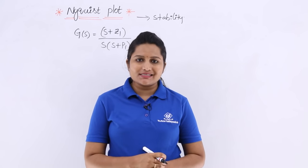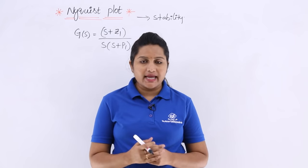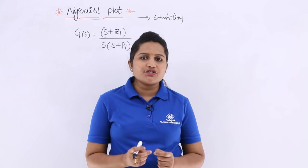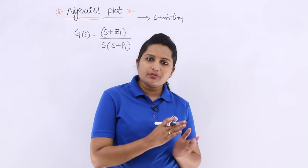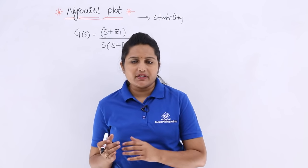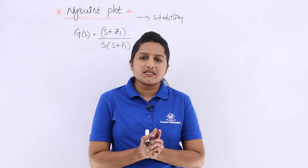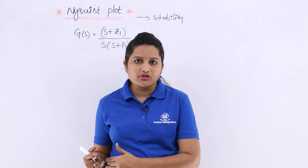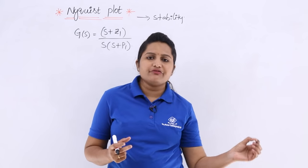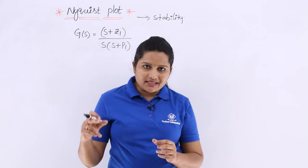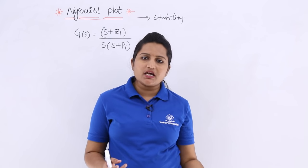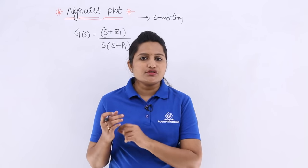In this video we are going to discuss stability of Nyquist plot. Polar plots are similar to Nyquist plots — Nyquist plots are just an extension to polar plots. In polar plots we consider the transfer function from omega equal to 0 to infinity, whereas in Nyquist plots we extend that plot from minus infinity to infinity.